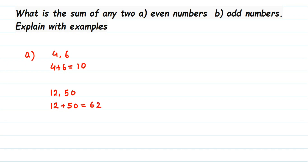Now let's take another example with three-digit numbers: 104 and 522. When we add them, 104 plus 522 gives us 626, and 626 is also an even number. So you can see that whether the number is two-digit, three-digit, one-digit, or four-digit, when you add two even numbers the answer is always an even number.